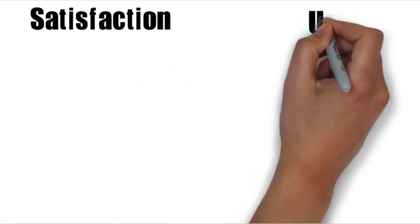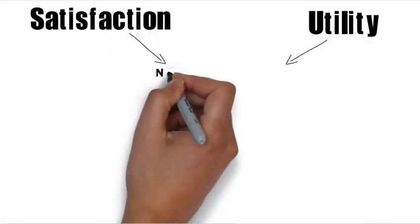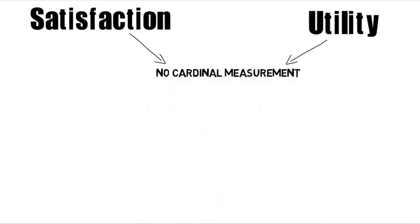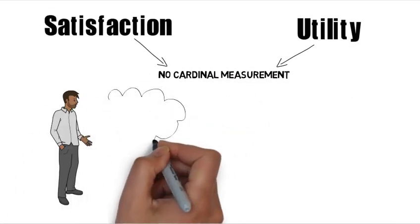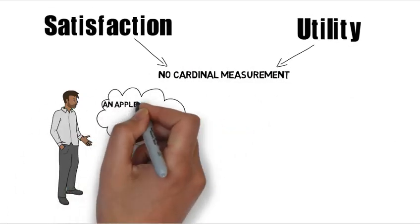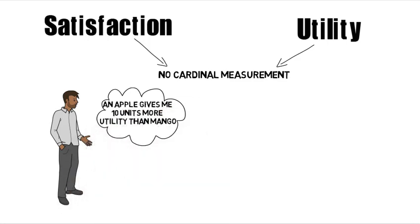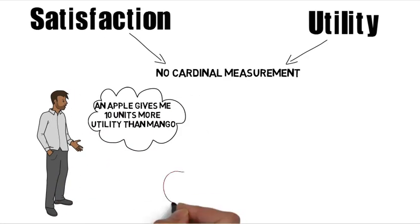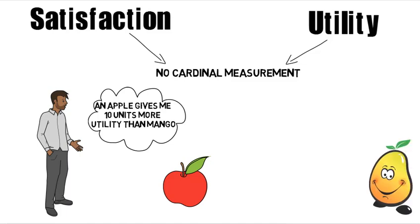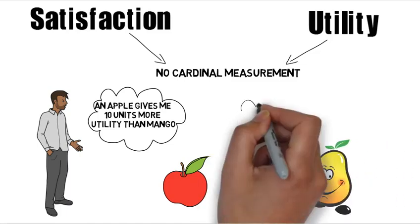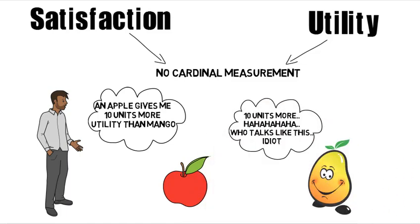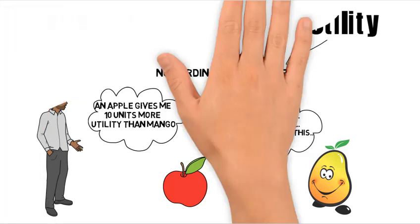Things like satisfaction and utility cannot be measured cardinally, meaning we cannot give it numbers and say an apple gives me 10 more units of utility than a mango. But we can just say that an apple gives me more utility than a mango. In general, talking about things like utility in cardinal terms doesn't make sense.